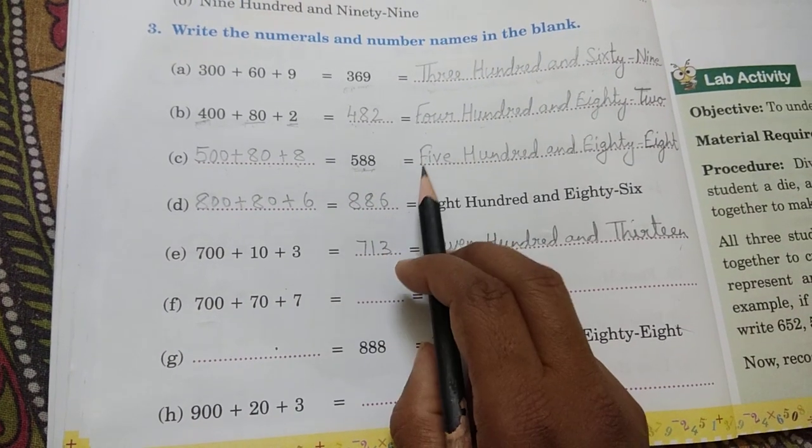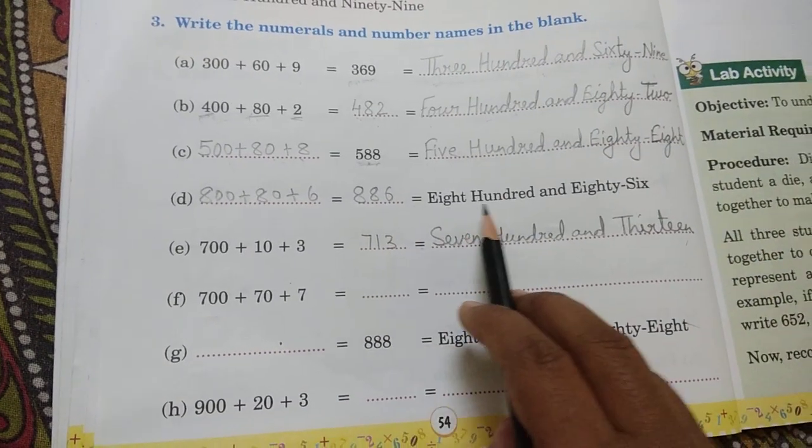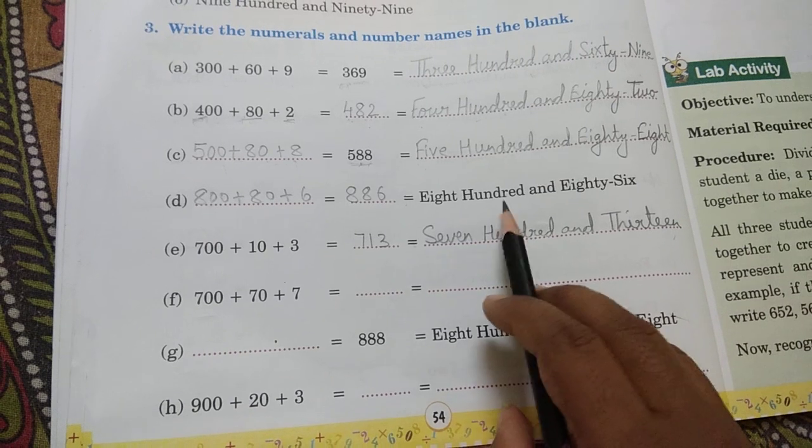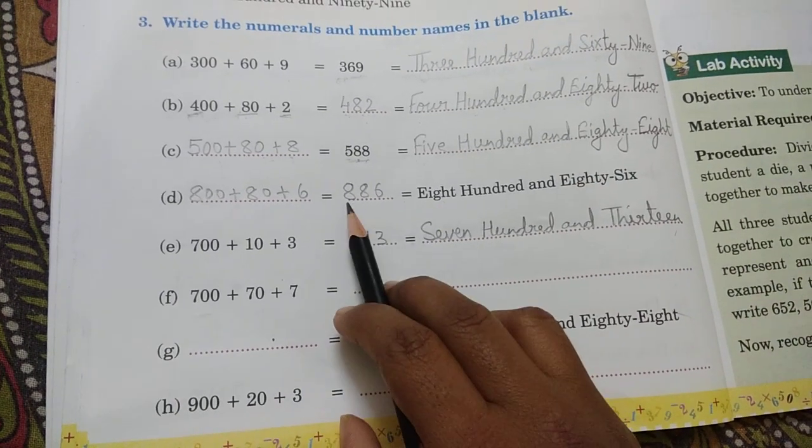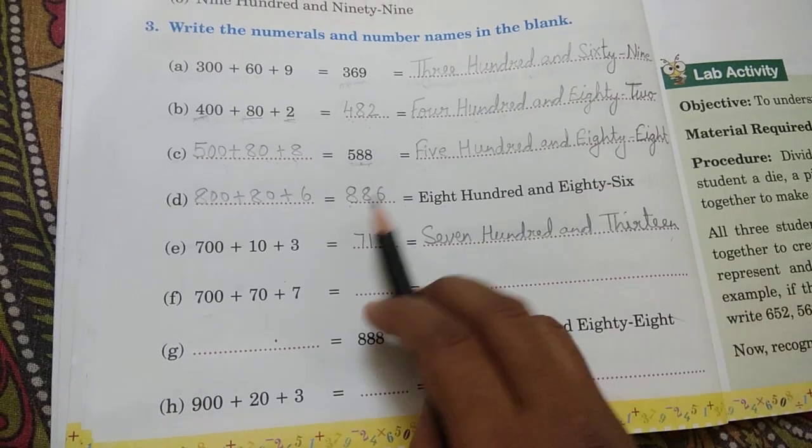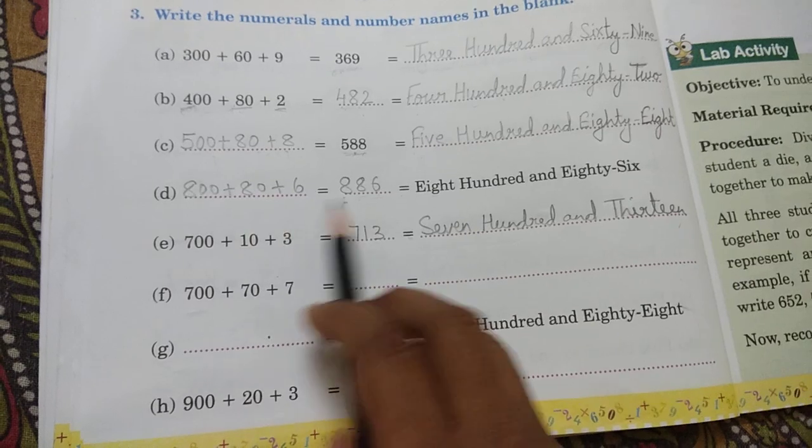Now we read this number - five hundred and eighty-eight. This is the spelling here. Eight hundred and eighty-eight. So we have written number 886, eight hundred and eighty-six.